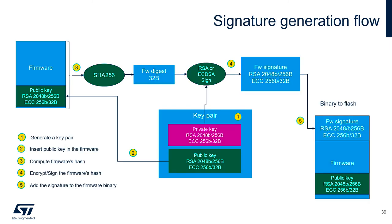Let's take a look at the signature generation flow. The first step is to create a public key pair using either RSA or ECC algorithm, and then the public part of the key will be embedded in the firmware so that the firmware can use this public key to do signature verification later on. The whole firmware binary will be used to generate the digest, and the digest data will be signed using RSA or ECC signing algorithm. Then the signature will be attached to the firmware binary. The whole binary, including both the firmware and the signature, will then be programmed to the flash of the chipset.